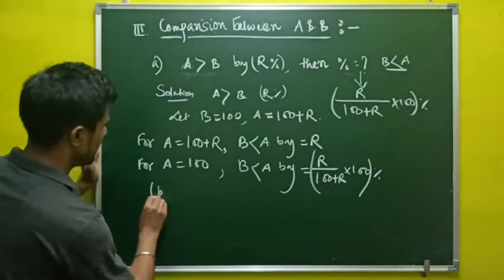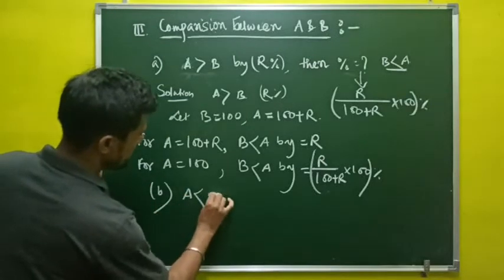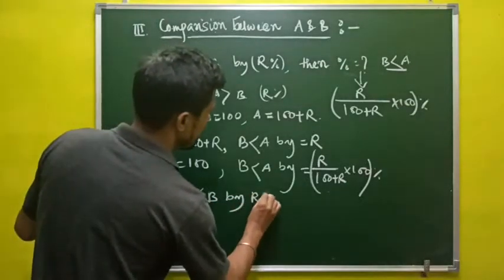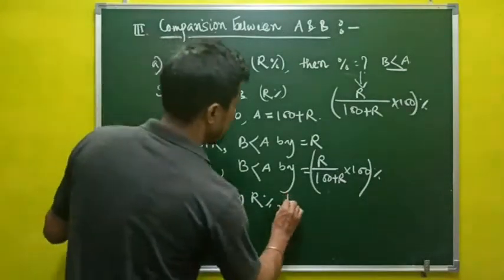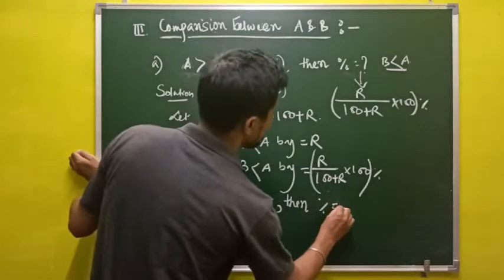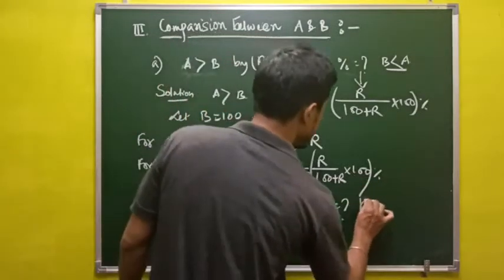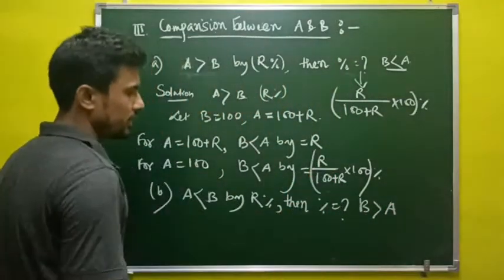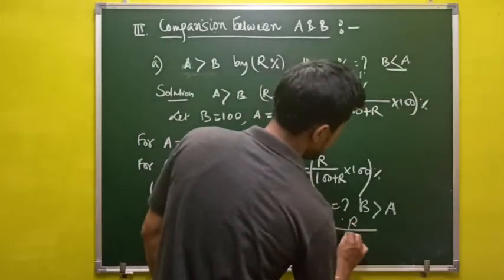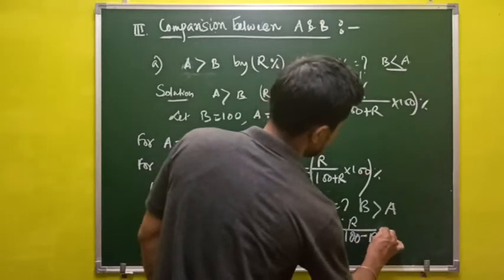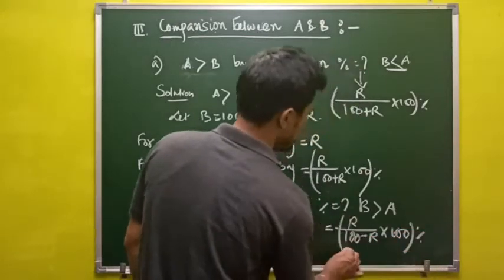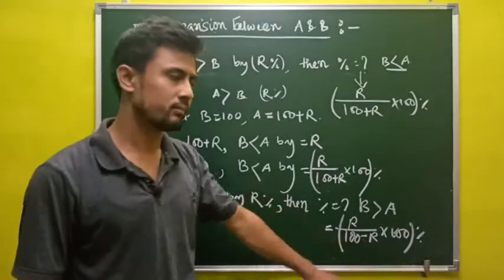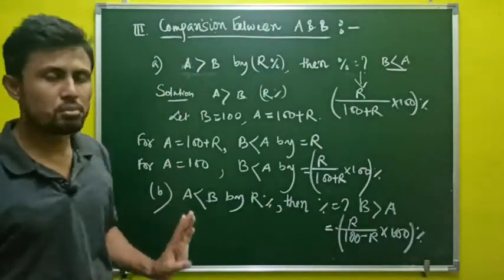Similarly, if A is less than B by R percent, and you are asked by what percent B is greater than A, the formula is similar but with a minus: R/(100 − R) × 100 percent. So that is everything from the concept of percentage. You have to remember all these concepts in order to solve the questions.